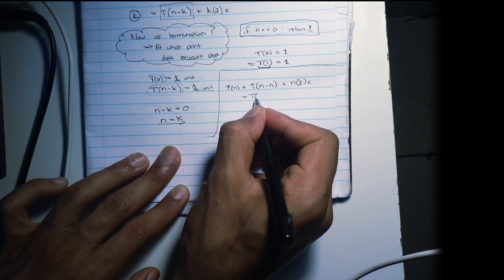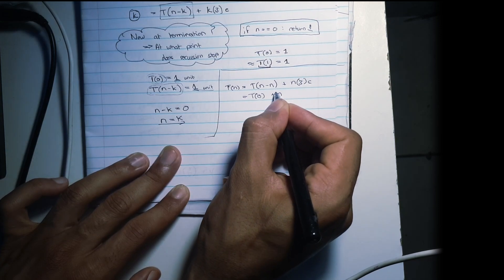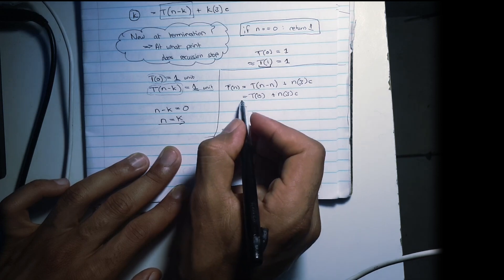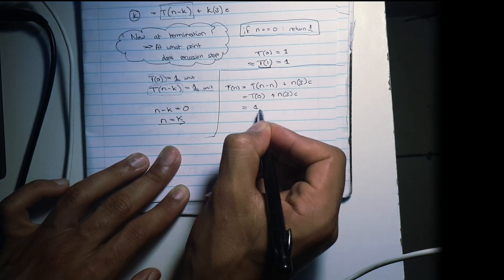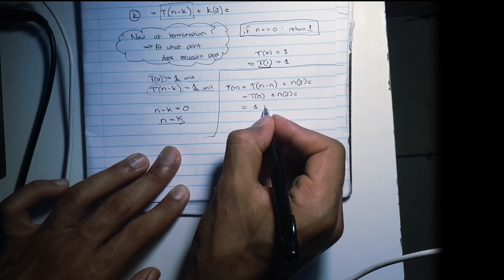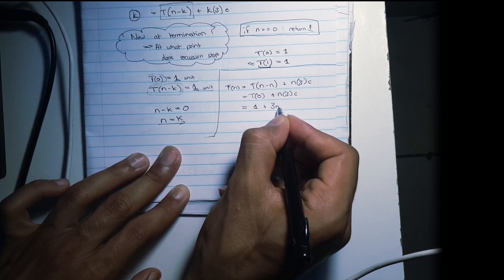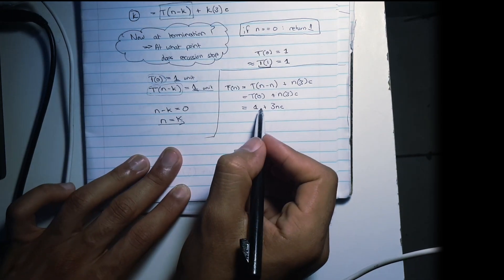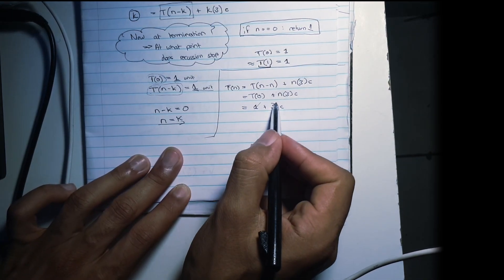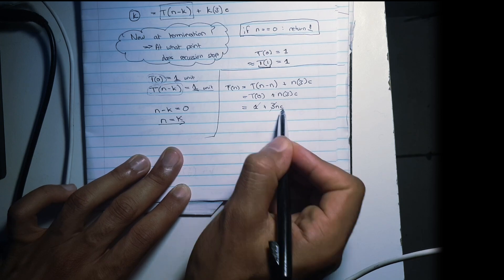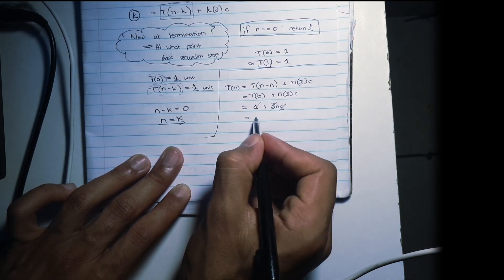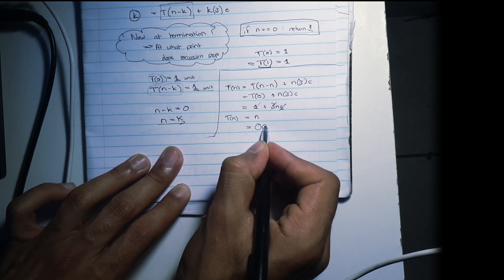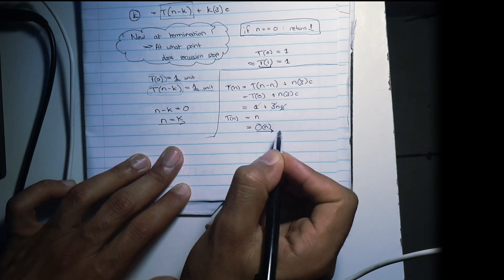This is the same thing as T of zero plus N times 3 times C. T of zero, we said, equals 1 based on our termination condition, giving us 1 plus 3NC. When analyzing time complexity, we ignore constants and multiplicative constants — C is also a constant — so we're left with N. T of N equals N, meaning we have big O of N for this particular problem.